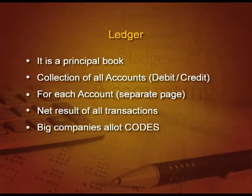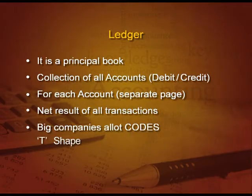Suppose we have got 10 transactions for Ram. All these transactions, whether debit or credit, will give the net result of Ram account on one page. Now, big companies allot codes instead of a particular page number. This account is in T-shape — on one side debit, on another side credit.